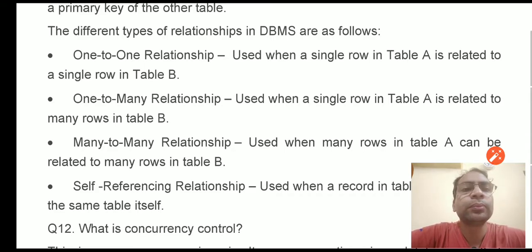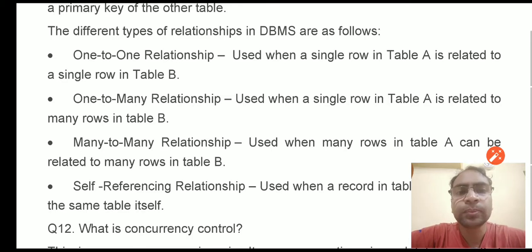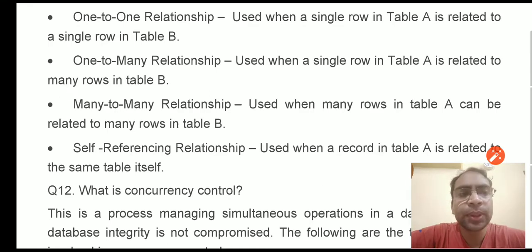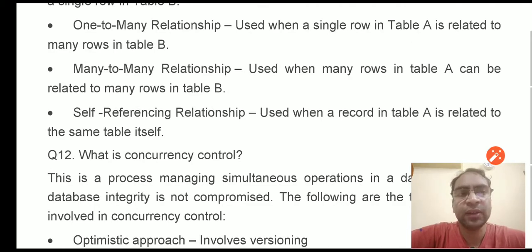One-to-one relationship is where a single row in table A is related to a single row in table B. One-to-many means a single row in table A is related to many rows in table B. Many-to-many means many rows in table A can be related to many rows in table B. Self-referencing means a record in a table is related to other records of the same table itself.